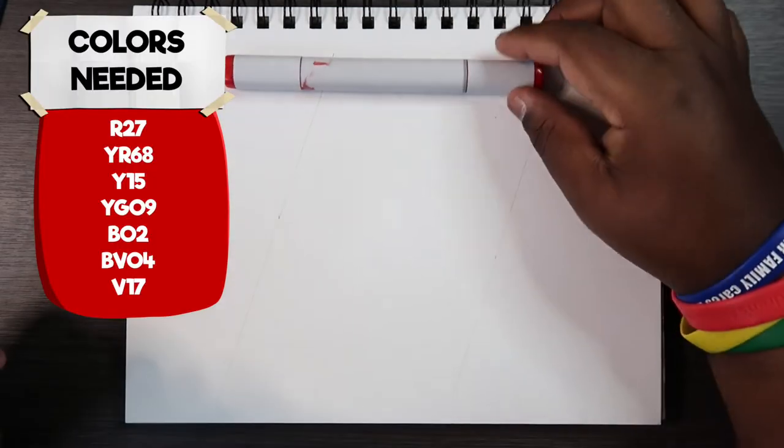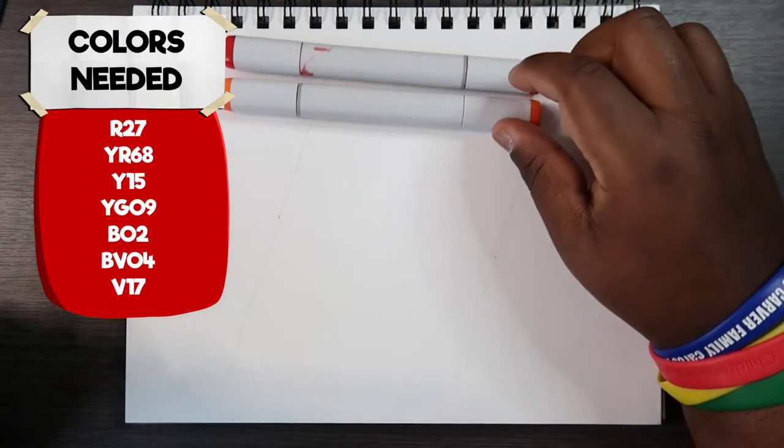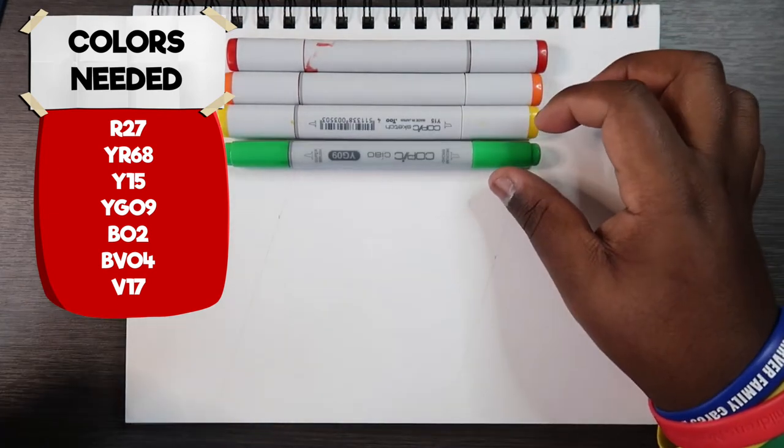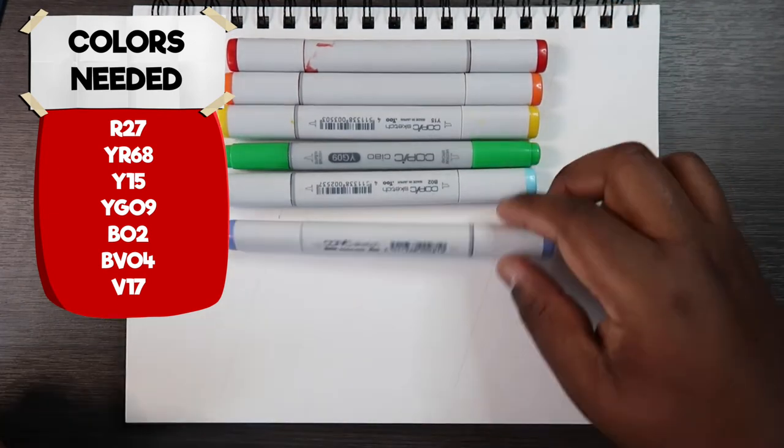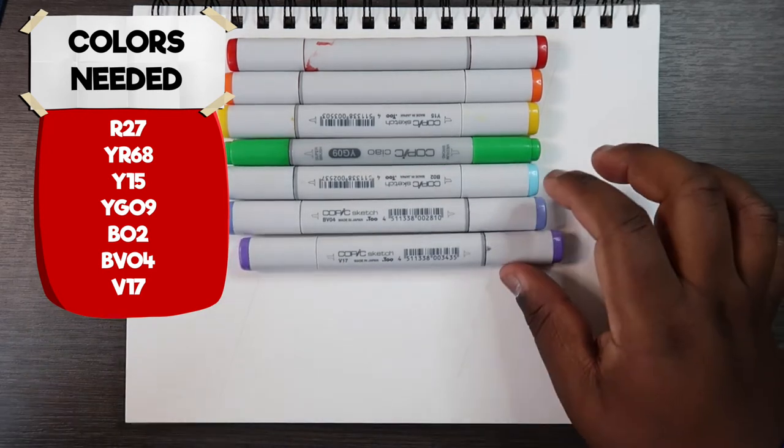Now I'm going to start off showing you guys what colors you'll need to actually color the rainbow. The colors you'll need are R27, YR68, Y15, YG09, B02, BV04, and V17.